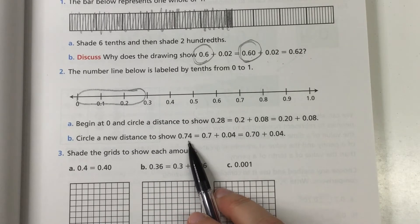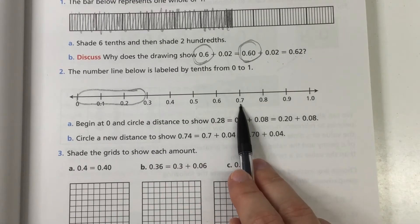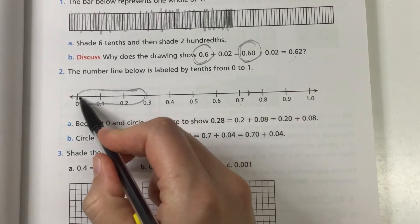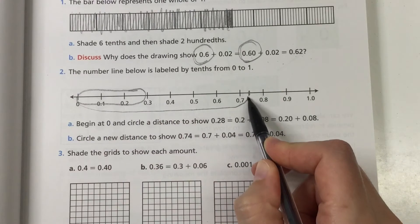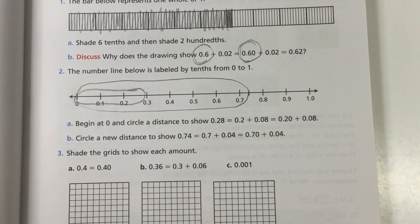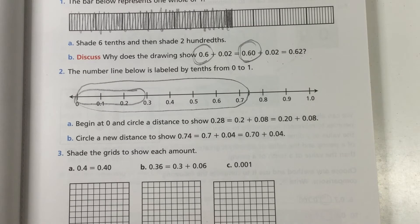Circle a new distance to show 74 hundredths. So there's my 70 or my 7 tenths but my 70 hundredths. 4 is going to be right about there.